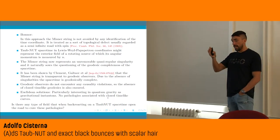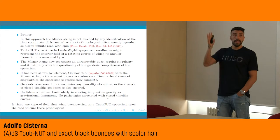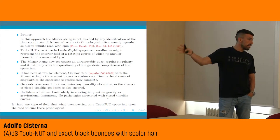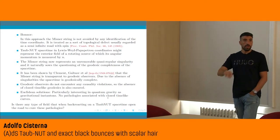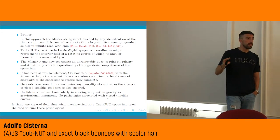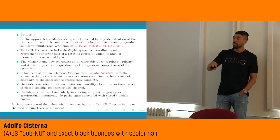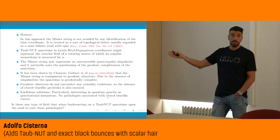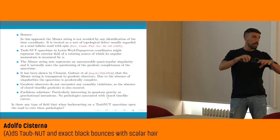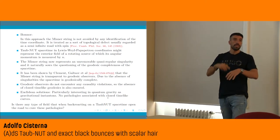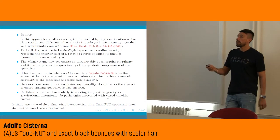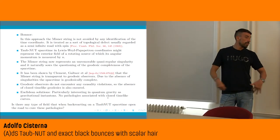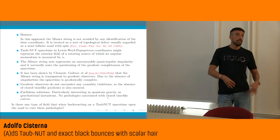This is done by not identifying the time coordinate according to the Misner string. So the Misner string is going to be there as a topological defect, and let's see what this spacetime tells us anyway — rather than trying to hide the Misner string with the previous trick, which, although nice, has some consequences like the identification of the time coordinate, giving closed timeline curves, and preventing the maximum extension of the spacetime.